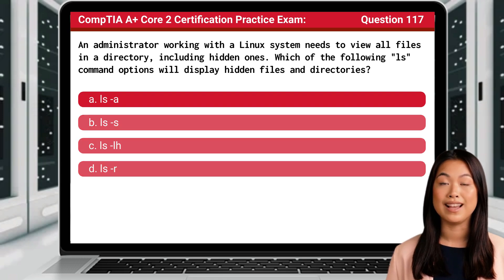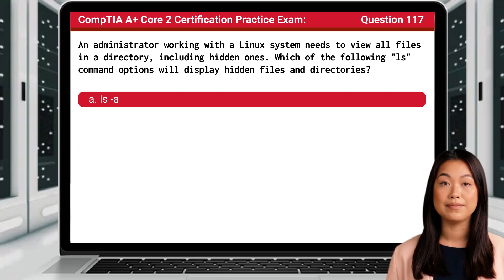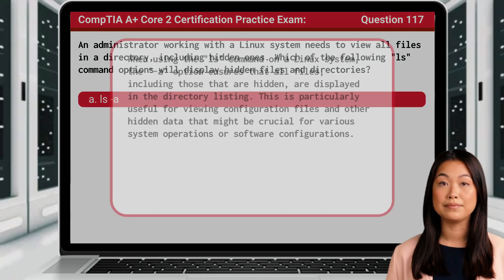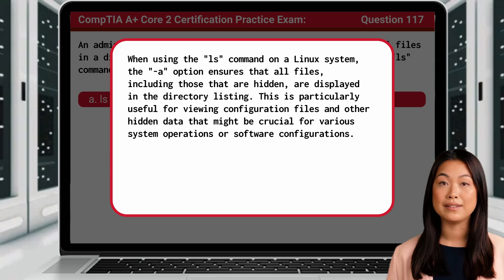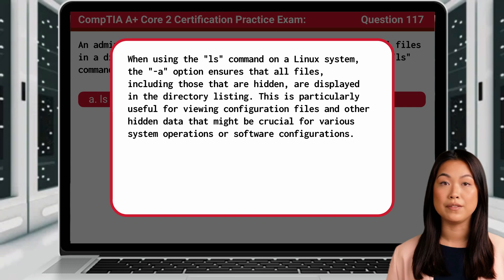The answer is A: ls -a. When using the ls command on a Linux system, the -a option ensures that all files, including those that are hidden, are displayed in the directory listing. This is particularly useful for viewing configuration files and other hidden data that might be crucial for various system operations or software configurations.